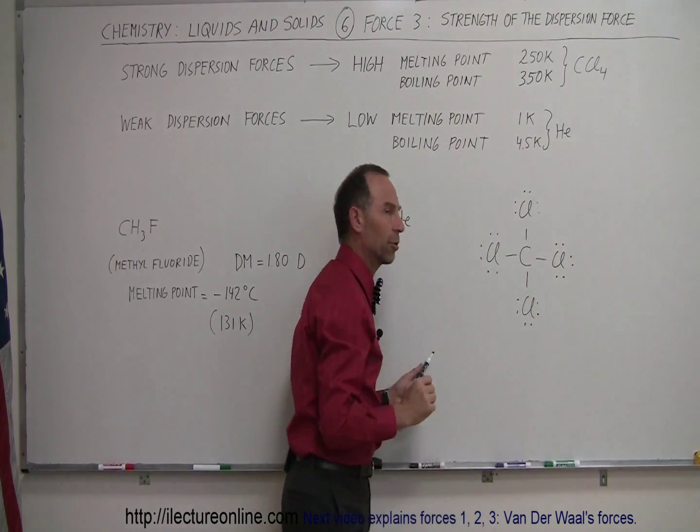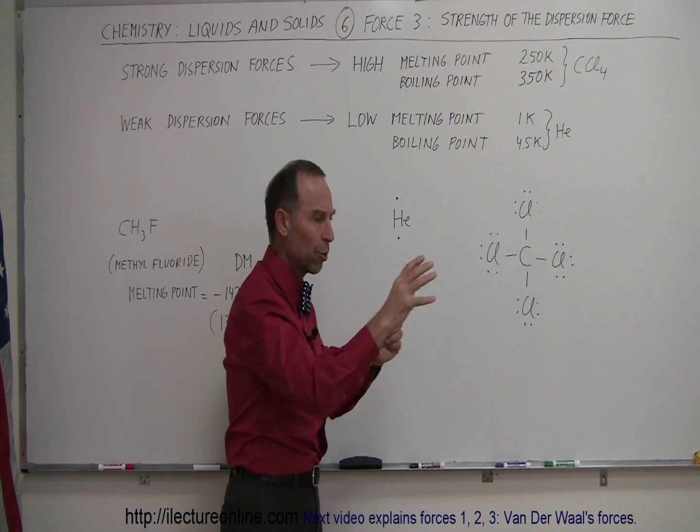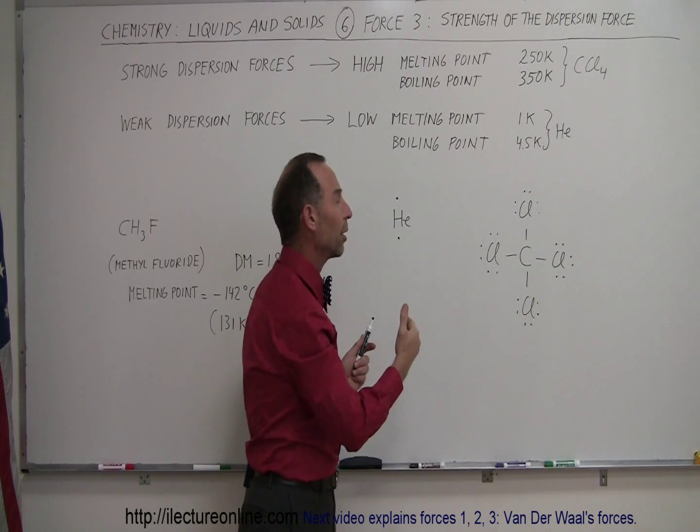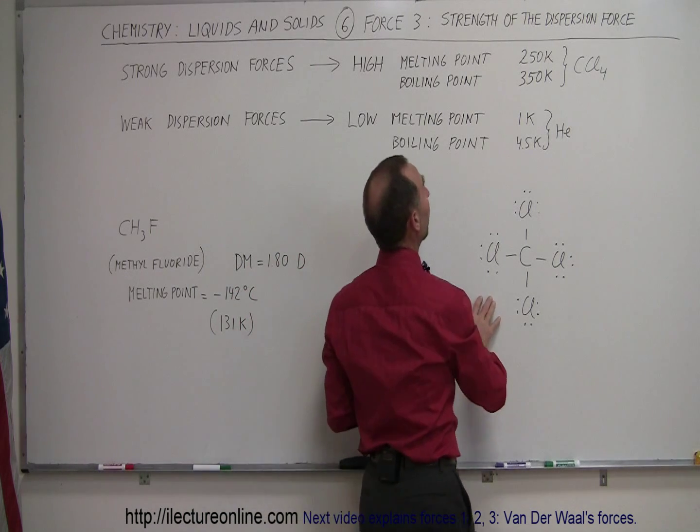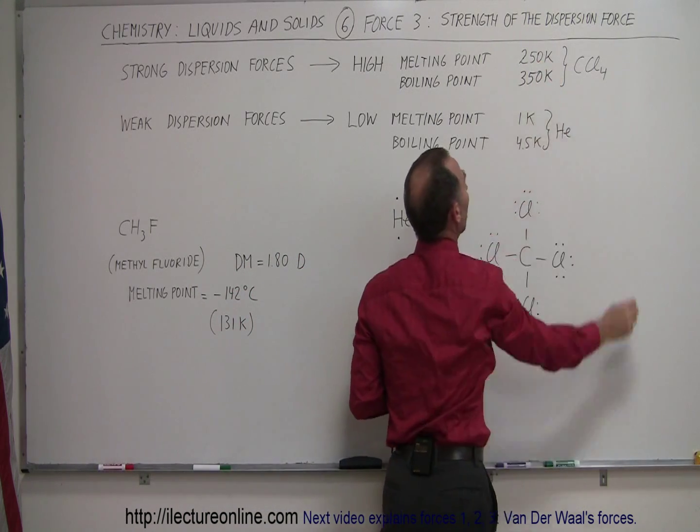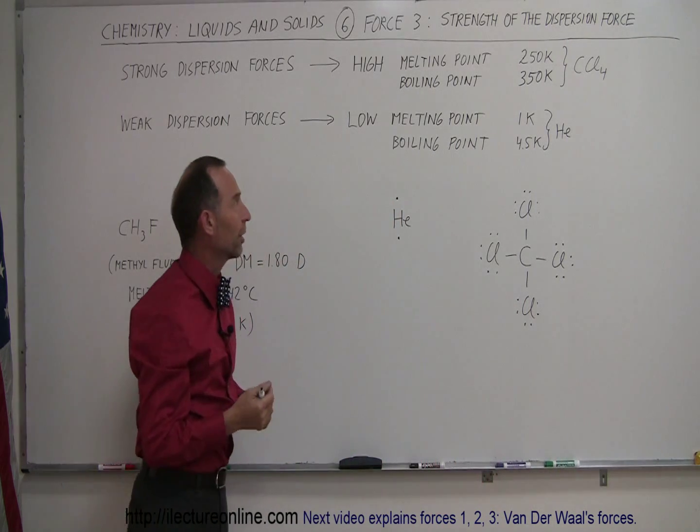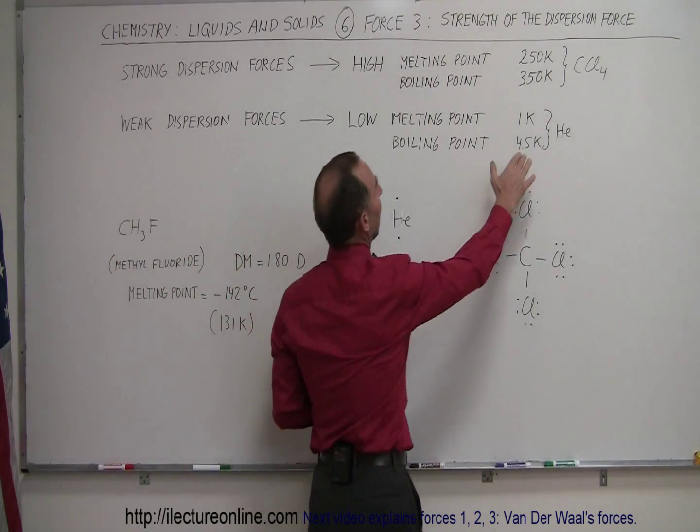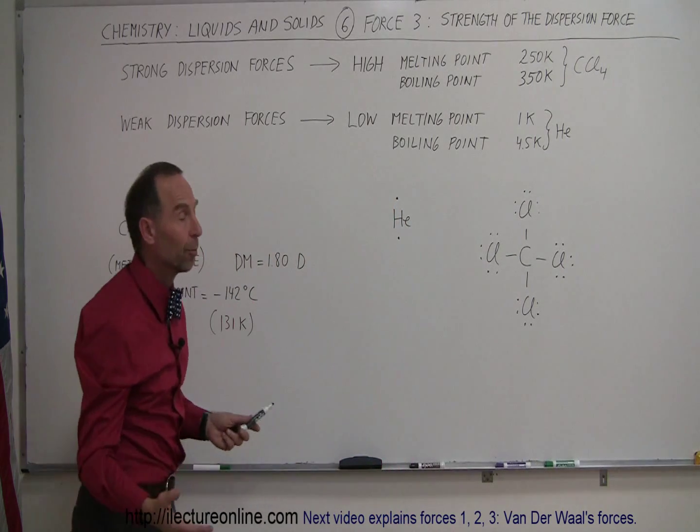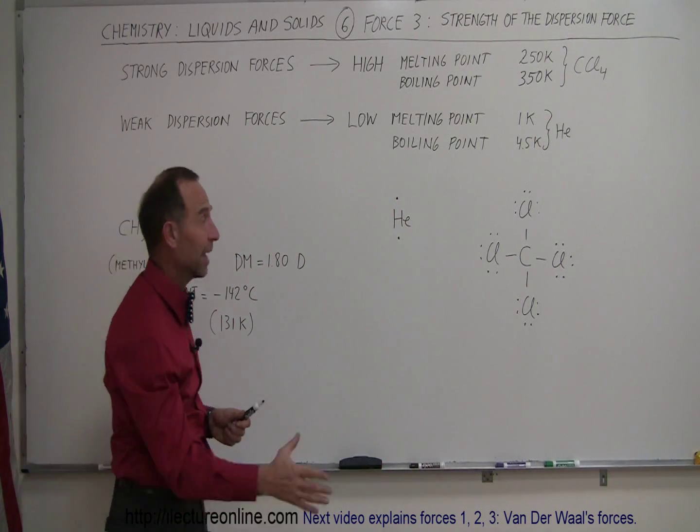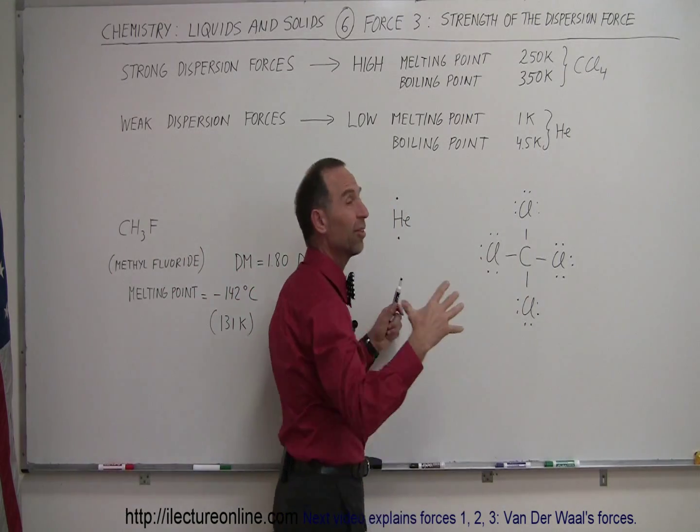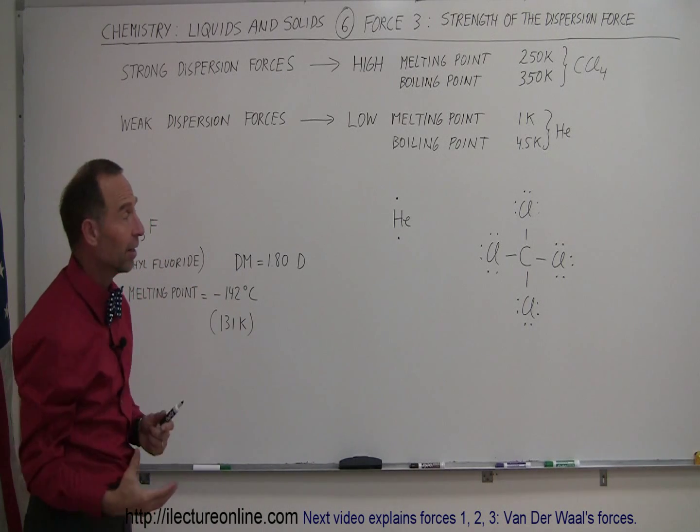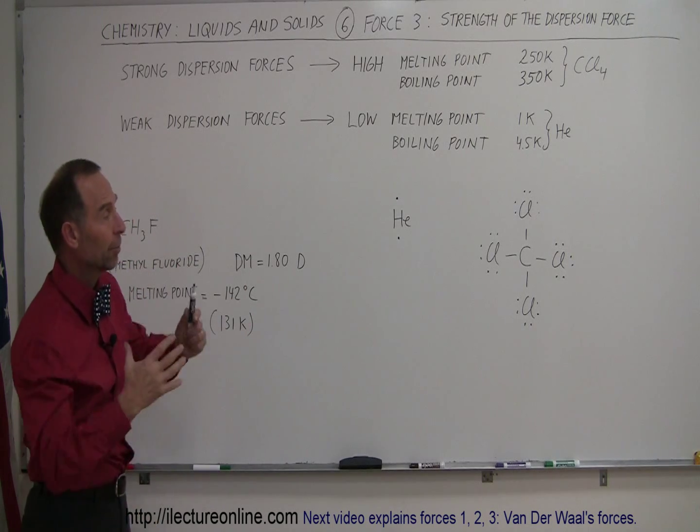So we have all these carbon tetrachloride molecules with electron distributions constantly changing and varying, so that on average there's a polarity to each molecule that is fairly large. The polarity is such that the boiling and melting points are almost as high as water. Carbon tetrachloride has a melting point of 250K, which is about 23 degrees centigrade below freezing for water, and 350K for the boiling point. The dispersion forces in carbon tetrachloride are very strong because it's a fairly large molecule and the ability to polarize depends almost entirely on having a lot of electrons and being a large molecule.